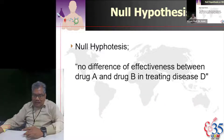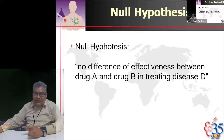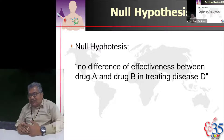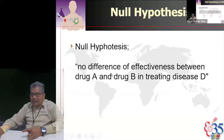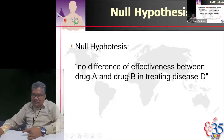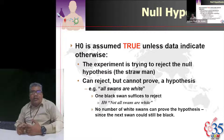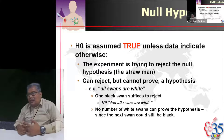You want to show drug A is better than drug B, but what you are trying to bring down is not that hypothesis — you're trying to bring down the null hypothesis. The null hypothesis is: there is no difference in effectiveness between drug A and drug B in treating the disease. The alternative hypothesis is that there is a difference. The null hypothesis is assumed true unless the data indicate otherwise. You can reject but you cannot prove the hypothesis.